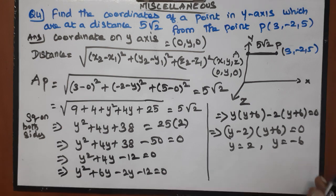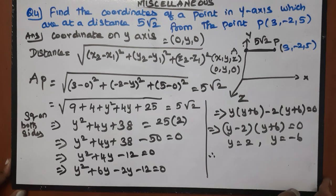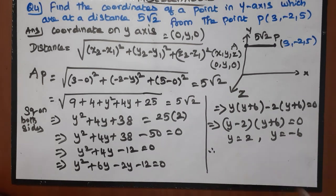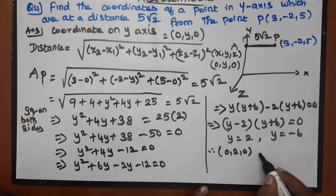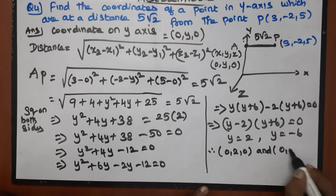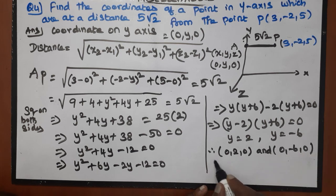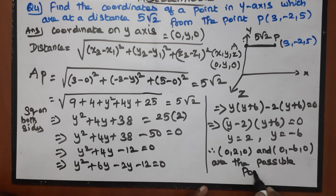So y squared plus 4y plus 38 minus 50 equals 0, giving y squared plus 4y minus 12 equals 0. Factorizing: (y plus 6)(y minus 2) equals 0, so y equals 2 or y equals minus 6. Therefore the points are (0, 2, 0) and (0, minus 6, 0).